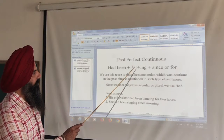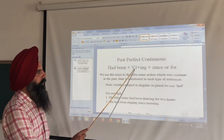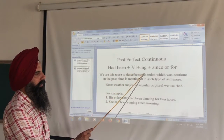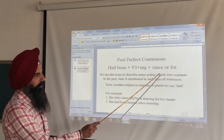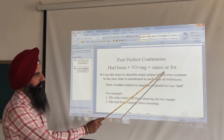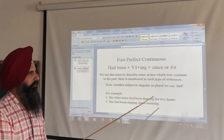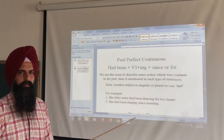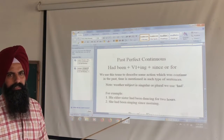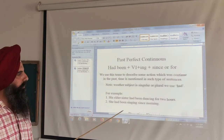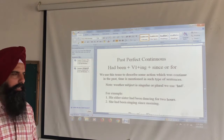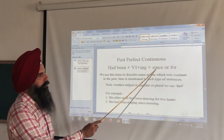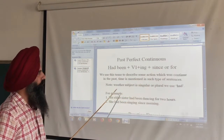In this tense we use 'had been' plus the first form of the verb plus '-ing', plus 'since' or 'for'. The usage of 'since' or 'for' I had already described in the Present Perfect Continuous Tense in the present series. You can check that tense to know where we use 'since' and where we use 'for'.